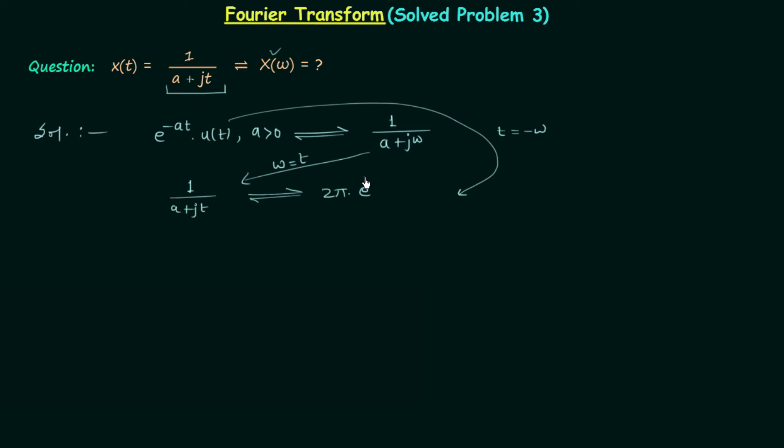So we will have e^(-a(-ω)). This means we have e^(aω) multiplied to u(-ω), and here a is positive. So this is the Fourier transform of 1 over a plus jt. This is our answer, X(ω).